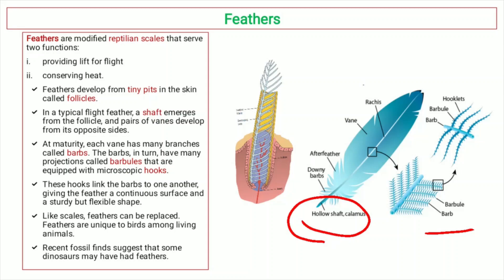These are known as barbs. On the barbs, there are multiple projections. These are known as barbules. As you can see in this figure, this is the main barb, from which various projections emerge — these are known as barbules.